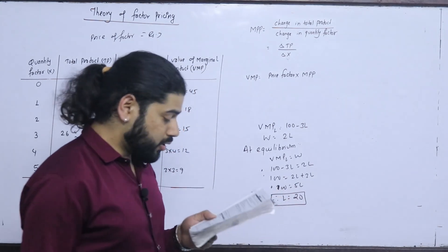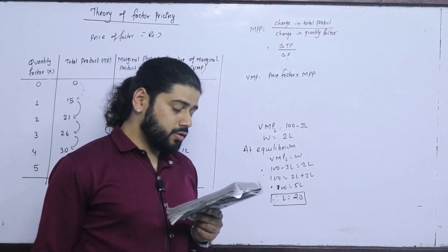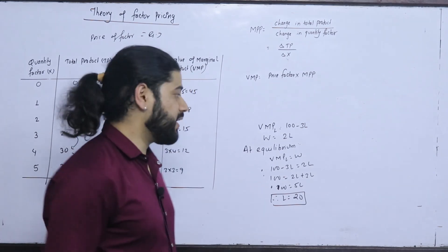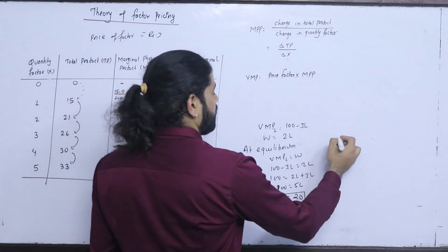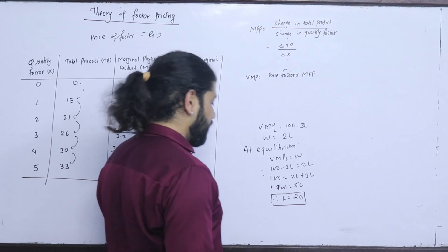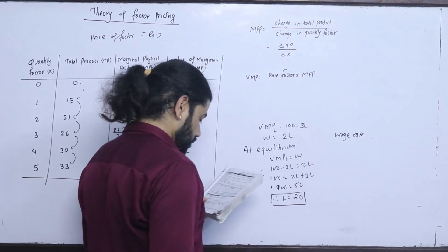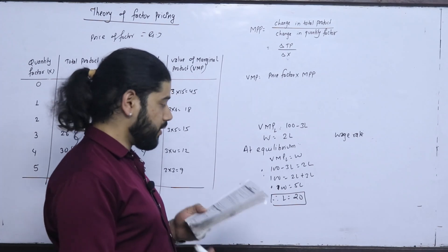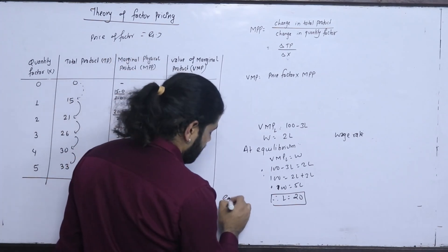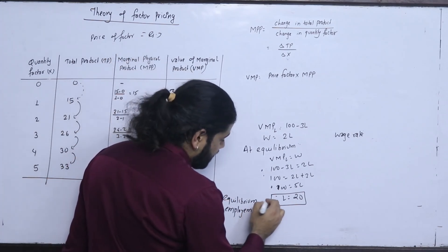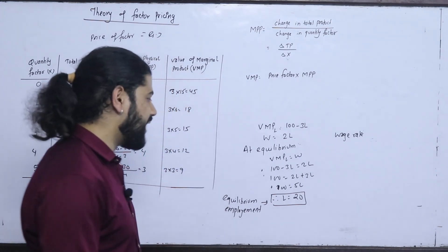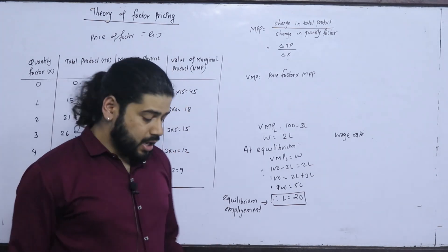Equilibrium level. Equilibrium condition also find equilibrium employment. Equilibrium employment, 20 units level.